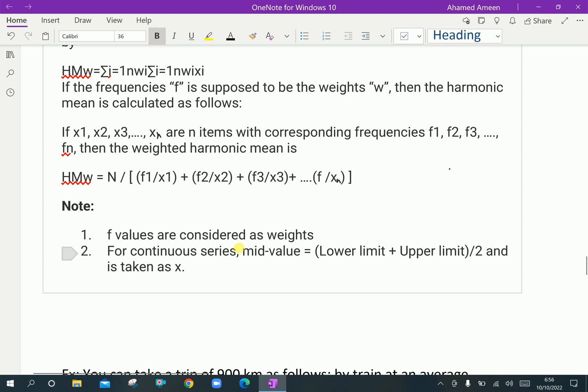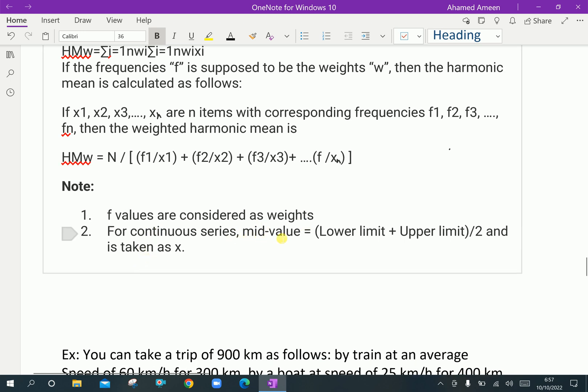F-values are considered as weights, that is the frequency. For continuous series, mid-value is equal to lower limit plus upper limit divided by 2 and is taken as X. Suppose limits are given, you have to add lower limits and upper limit divided by 2, it becomes X.